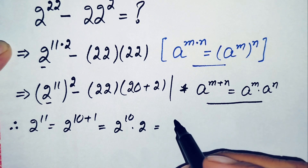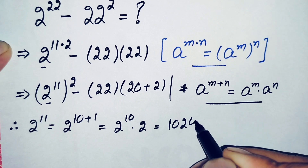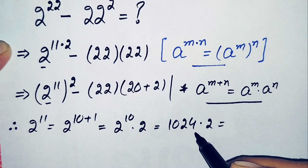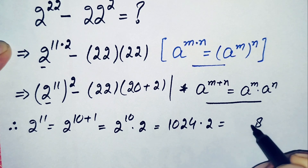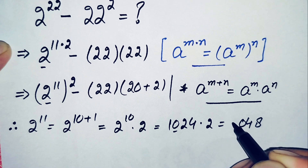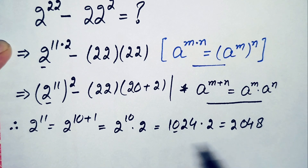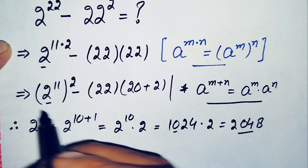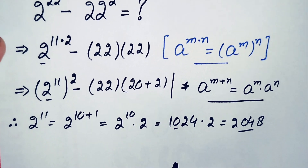Now 2 raised to power 10 is the famous value 1024. So we multiply 1024 times 2: 2 times 4 is 8, 2 times 2 is 4, 2 times 0 is 0, and 2 times 1 is 2, giving us 2048. So the value of 2 raised to power 11 is 2048.